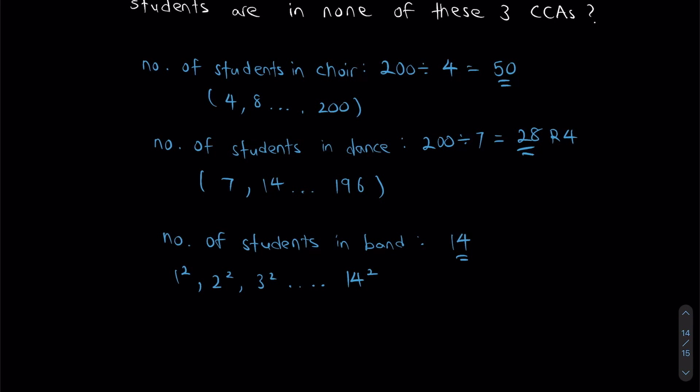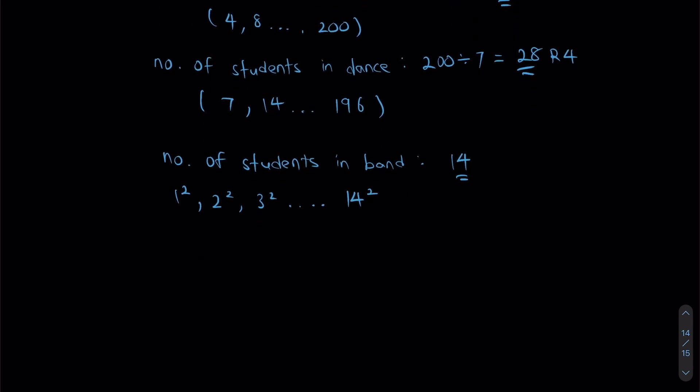Does that mean we're done? Unfortunately not. You see, there are some students who are going to be overlapping. So, now what we need to try to do is find those overlaps. So, I'm going to find the overlap between choir and dance first. So, number of students in both choir and dance. And there's actually a pretty easy way to do this. I basically have to find a common factor between 7 and 4. And that number happens to be 28. Which means, if I take 200 divided by 28, all students whose number is a multiple of 28 will be in both dance as well as choir. This right here gives me 7 remainder 4. Which means, there are exactly 7 students in both choir and dance.